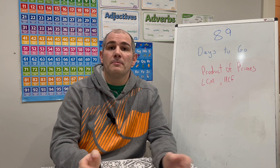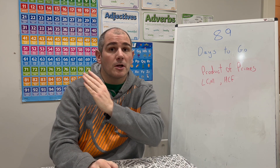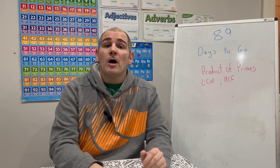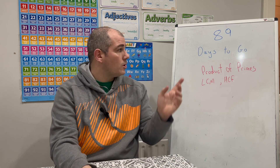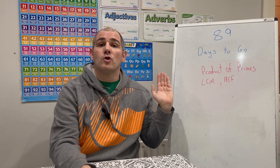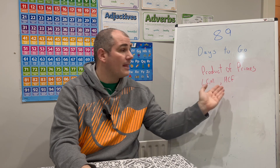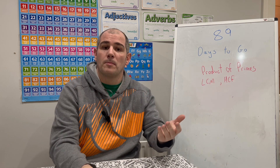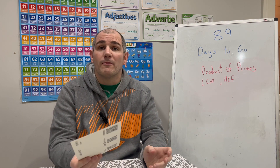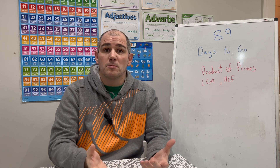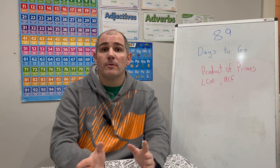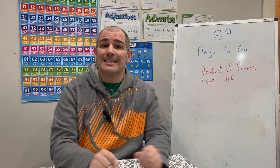Hi everyone, welcome to this GCSE higher Maths revision video. We're counting down from 100 days to go down to one day to go to your GCSE Maths exam, and we've got 89 days to go. In today's video we're going to focus on product of primes — how to write numbers as a product of primes, and how to find the lowest common multiple (LCM) and the highest common factor (HCF) using those product of primes. If you've got the higher revision cards, card number 61 goes through those. We'll also cover index form, and there'll be some questions for you to try as well.